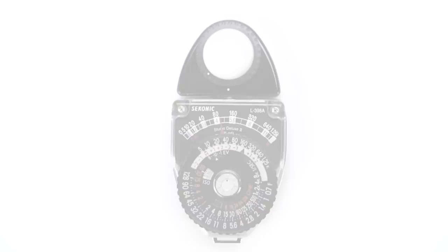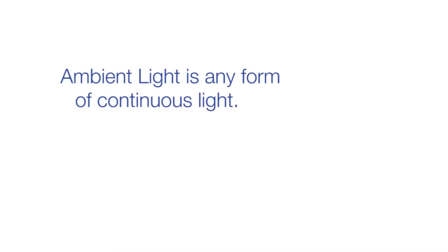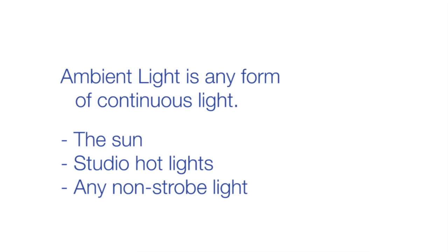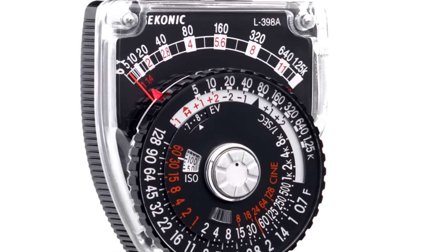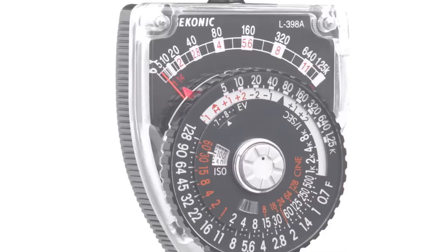Metering ambient light. Ambient light is any form of continuous light. For example, the sun, studio hot lights, or any non-strobe light. The L398A's simple analog system makes it easy to get accurate exposures in any ambient light situation.